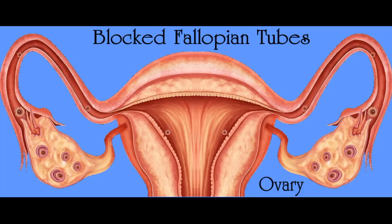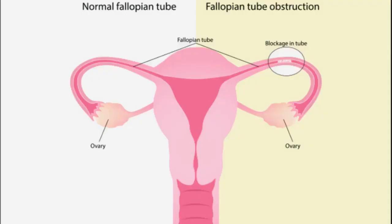Structural abnormalities, such as blocked fallopian tubes or a uterus that is shaped abnormally, can prevent the egg and sperm from meeting. Polycystic ovary syndrome is a common condition in which the ovaries produce too much androgen, leading to ovulation disorders and other symptoms.